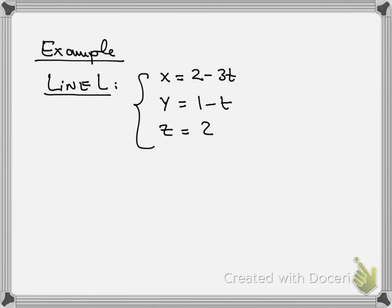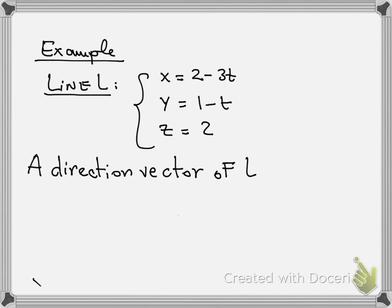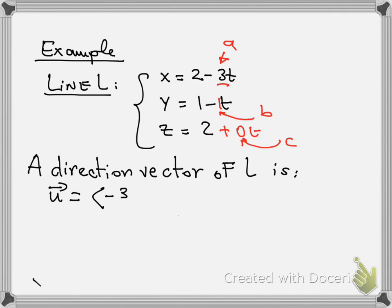For example, if the line L is given by x = 2 − 3t, y = 1 − t, and z = 2, the direction vector would be the coefficients of t. So here minus 3, minus 1, and for z there is no t, so it's 0. The direction vector u equals (−3, −1, 0).